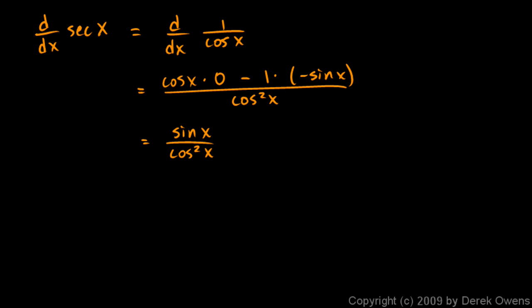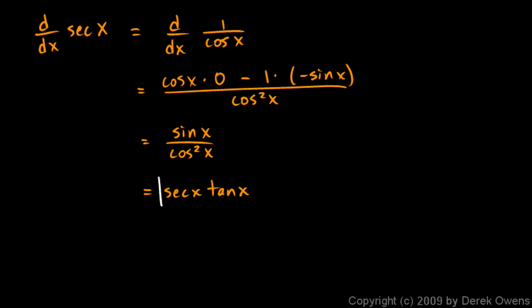That's most commonly written by splitting the fraction: sine over one of the cosines is tangent, and the remaining cosine in the denominator is secant. So this is written as secant x tangent x. The derivative of the secant function is secant x tangent x.